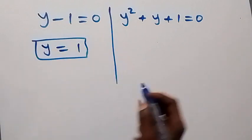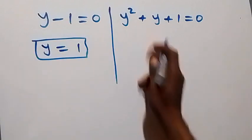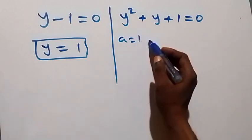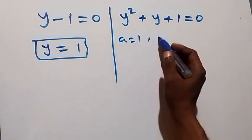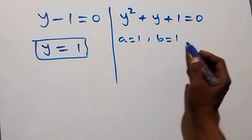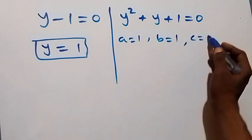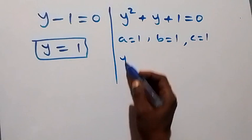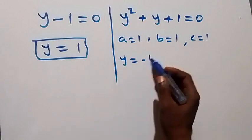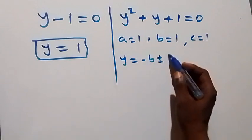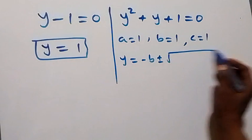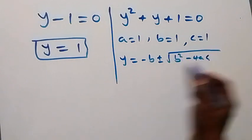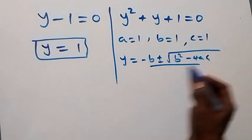Then from the second case, we use the quadratic formula. Here, a is 1, b is 1 as well, and c is also 1. Then from the formula, we have y equals to negative b plus or minus square root of b squared minus 4ac, all over 2a.